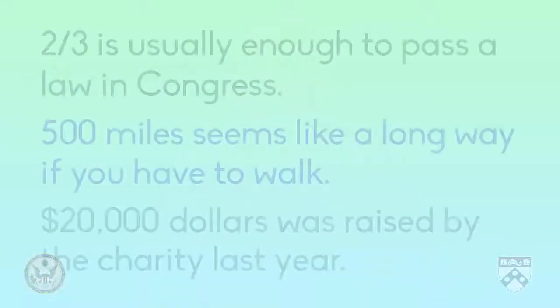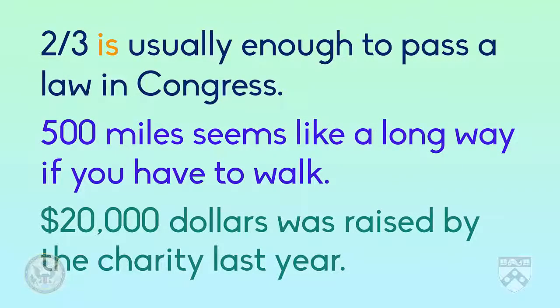For example, two-thirds is usually enough to pass a law in Congress. 500 miles seems like a long way if you have to walk, and $20,000 was raised by the charity last year. Notice that in all these examples, we need to use the third-person single form of the verb: is, seems, and was.